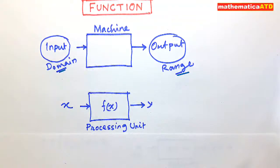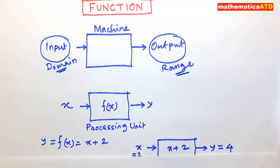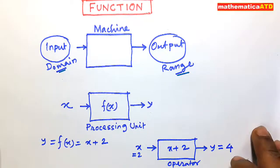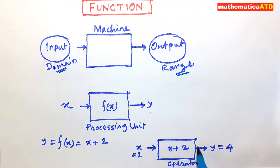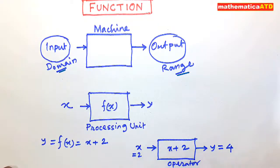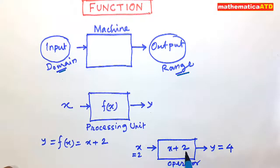Consider an example: Y = f(x), where f(x) = x + 2. Our machine is this box containing the rule f(x) = x + 2. If we input X, it gives a value Y. For example, if x = 2, then 2 + 2 = 4, so the output is 4. If x = 0, then 0 + 2 = 2, so the output is 2.